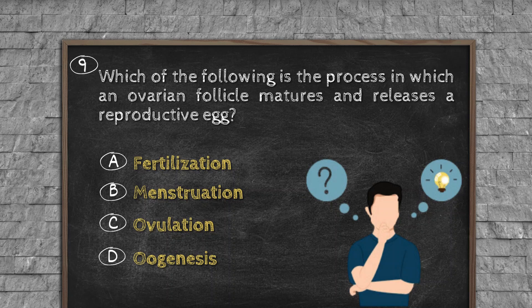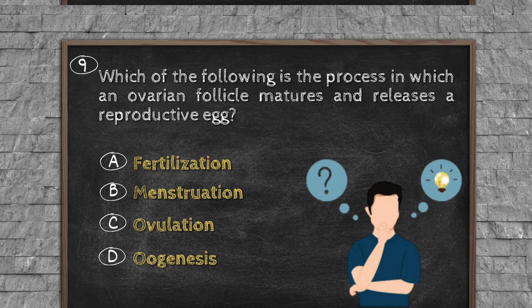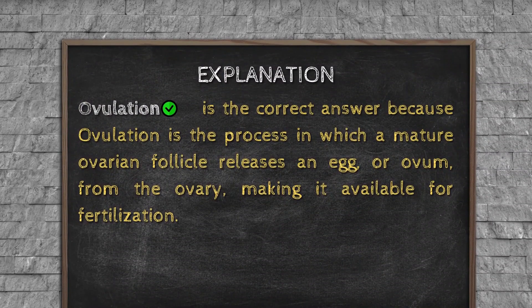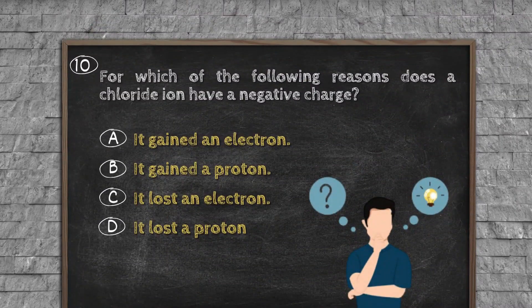Question number nine. Which of the following is the process in which an ovarian follicle matures and releases a reproductive egg? Option A, fertilization. Option B, menstruation. Option C, ovulation. Option D, oogenesis. Explanation: Ovulation is the correct answer because ovulation is the process in which a mature ovarian follicle releases an egg or ovum from the ovary, making it available for fertilization.